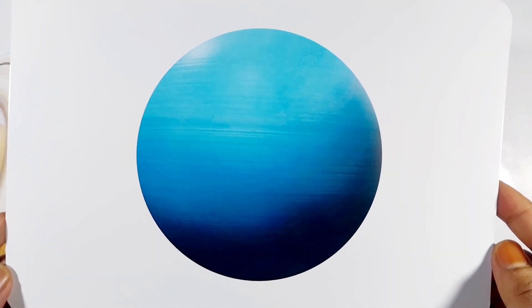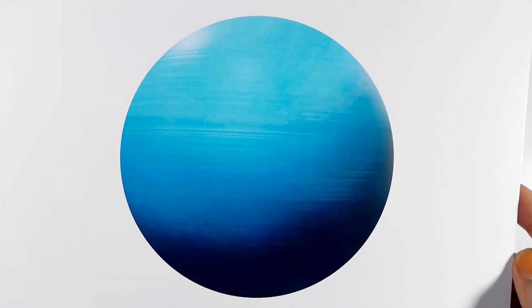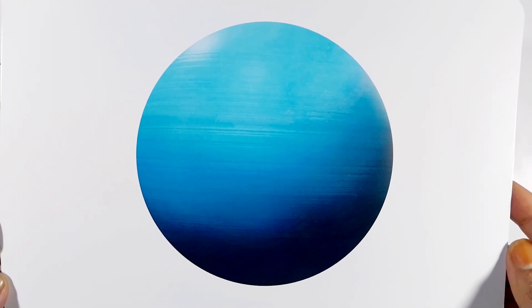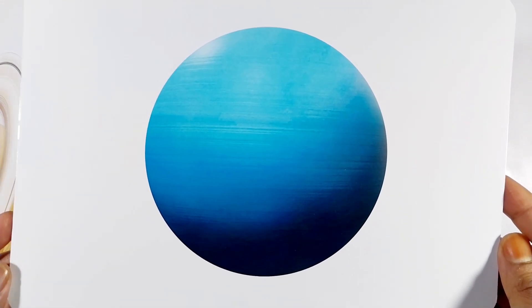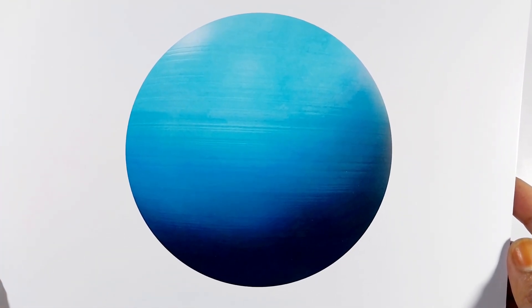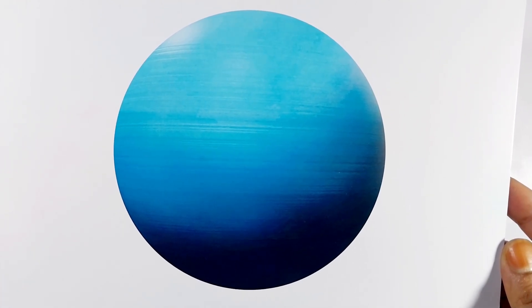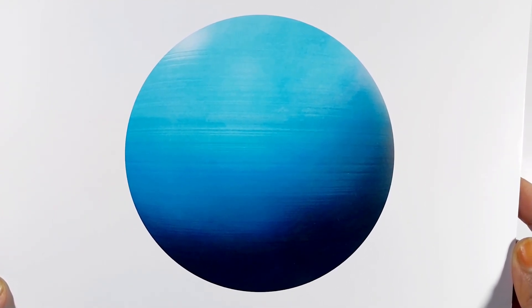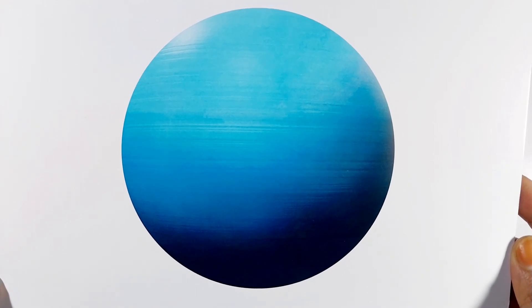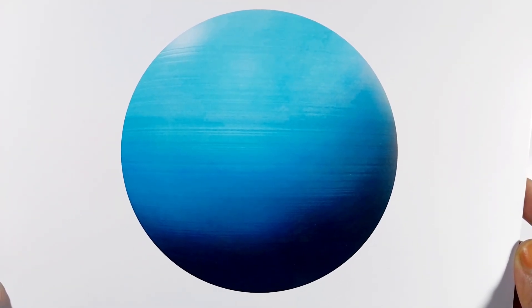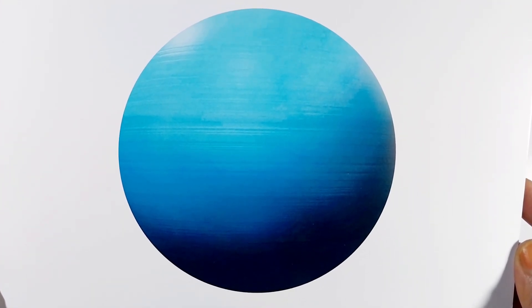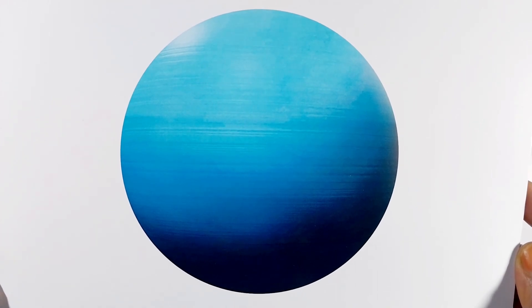Uranus is a unique planet in our solar system because it spins on its side, causing its poles to lie where most other planets have their equators. It is the seventh planet from the sun and is classified as an ice giant, consisting mainly of hydrogen, helium, and ice. Uranus has a system of faint rings and is orbited by 27 known moons, each named after characters from the works of William Shakespeare and Alexander Pope.